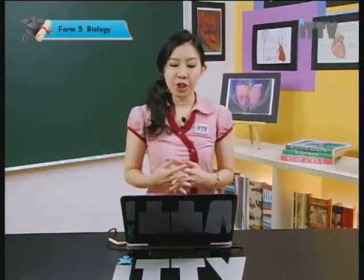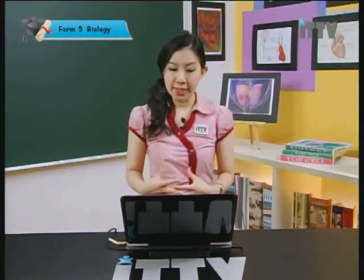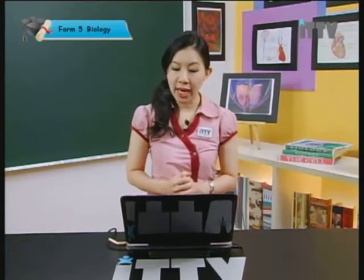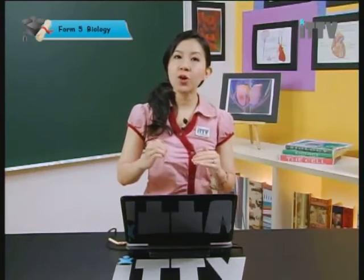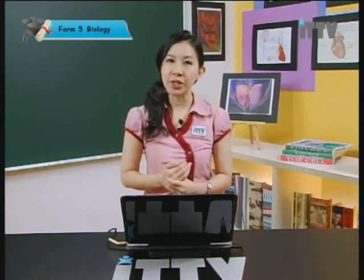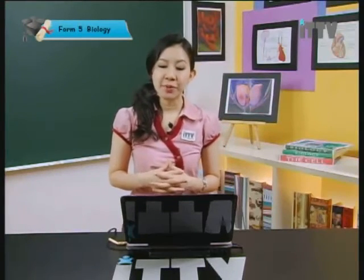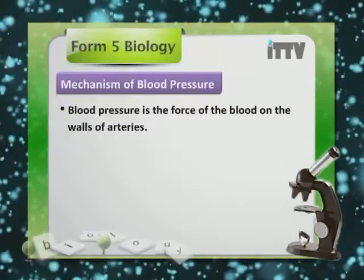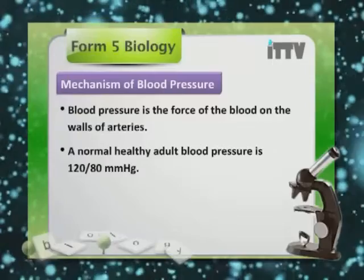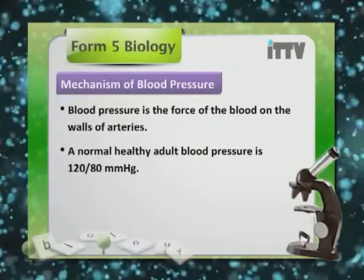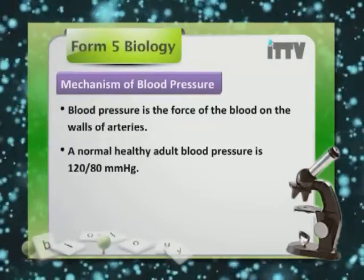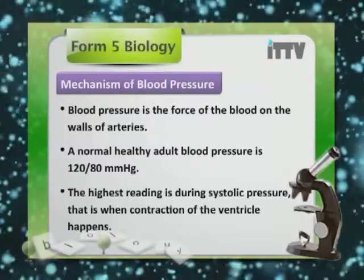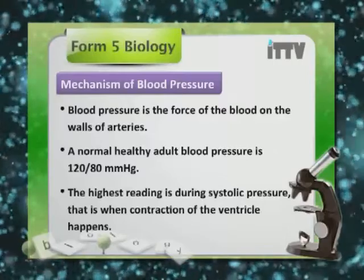Blood pressure is very important in ensuring sufficient flow of oxygen in the blood to the heart. It is the force of the blood on the walls of arteries. A normal healthy adult blood pressure is 120/80 mmHg. The highest reading is during systolic pressure, that is when the contraction of the ventricle happens.